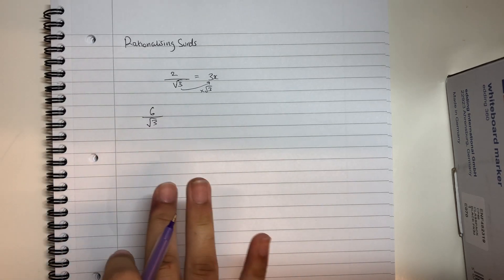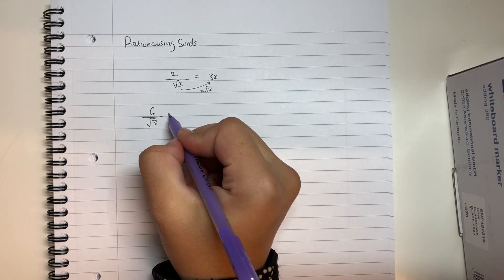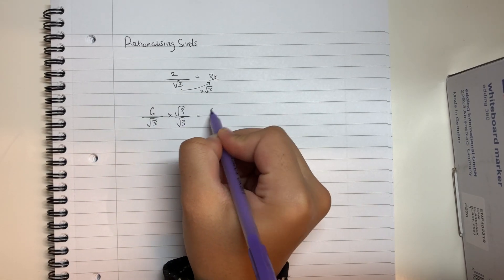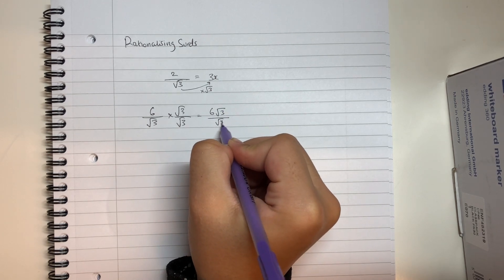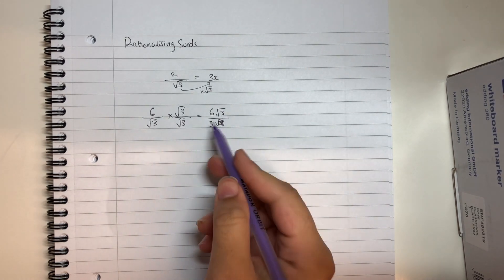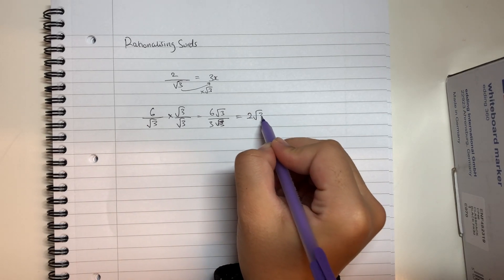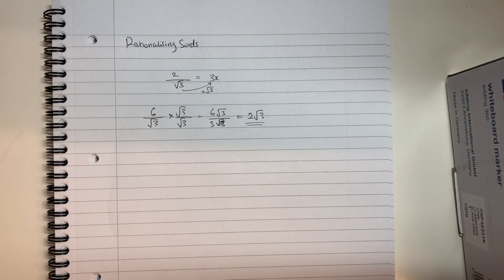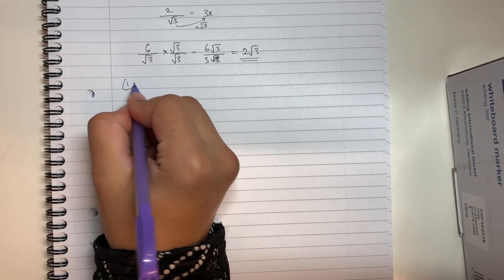I already know that root 3 multiplied by root 3 cancels out the surd, so I'm going to multiply the top by root 3 and the bottom by root 3. That gives me 6 root 3 over 3. Now 6 divided by 3 simplifies to give me 2, and the root 3 stays, so that simplifies to give me 2 root 3. Now this might still be a little confusing, so let's write down some rules for rationalizing surds.